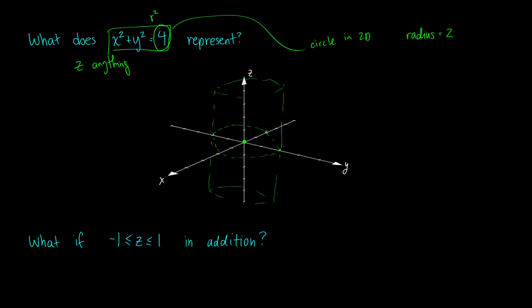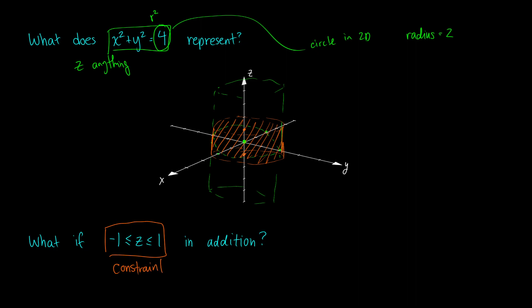What if we added a restriction? If we say x² + y² = 4 but z has to be between -1 and 1 inclusive, we're setting limits for how tall the cylinder can be. So we would only account for the circle of radius 2 between z = -1 and z = 1 — we've imposed another constraint on how high and low our z values can go.